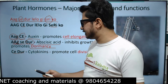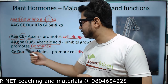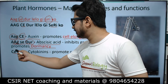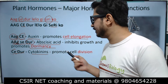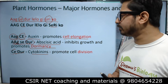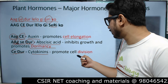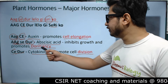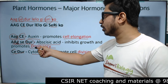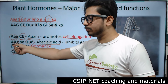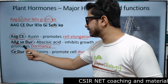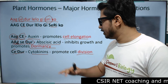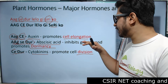Moving to 'Say Do': 'CE' is for Cytokinin, and 'D' is for division — cell division. So earlier 'D' was for dormancy in Abscisic acid, and here 'D' is for division in Cytokinin. Cytokinin promotes cell division.